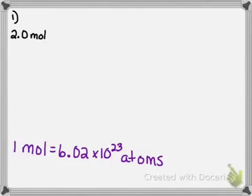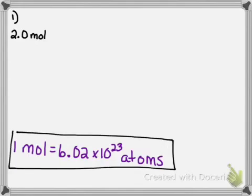In order to do any of these problems that involve converting from moles to atoms, you have to use this conversion factor here at the bottom. One mole of any substance is always equal to Avogadro's number, which is 6.02 times 10 to the 23rd power.